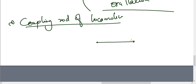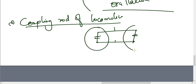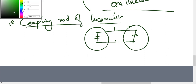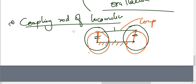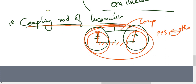In this special case, all links are of equal length. With equal links, both cranks undergo complete rotation. This is the special case of the 4-bar chain inversion. Thank you.